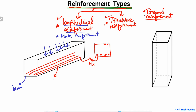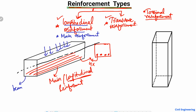These four bars are known as the main reinforcement or the longitudinal reinforcement. They are called longitudinal reinforcement because they are provided along the longitudinal axis of the member. In this case the longitudinal axis of the beam runs in this direction, so the reinforcement bars are also provided in this direction.